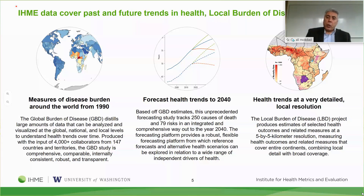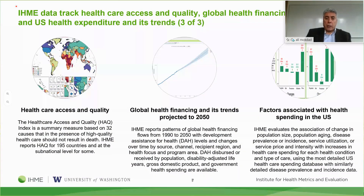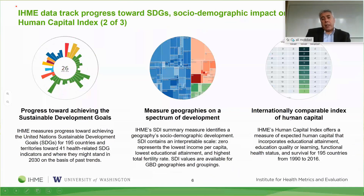We have a project called the Local Burden of Disease where we work at 5 by 5 kilometer resolution. We monitor all the Sustainable Development Goals for every country in the world. Everything we produce is also analyzed by a Socio-Demographic Index where we look at fertility, income, and education, ranking countries based on this index to show if a country is performing as expected. We also produce a human capital index for ages 20 to 60, using not just years of schooling but also quality of education based on international and national tests.